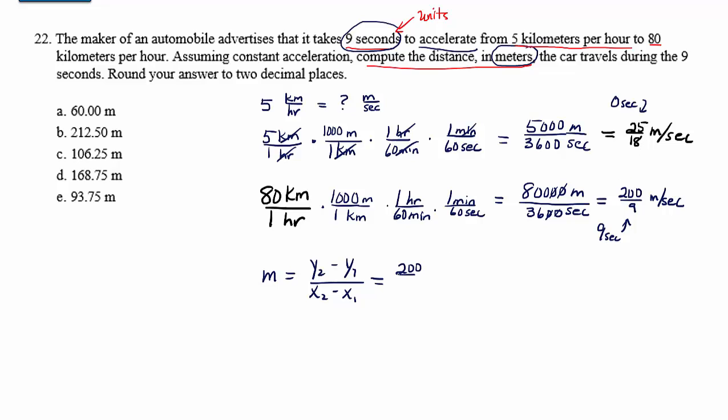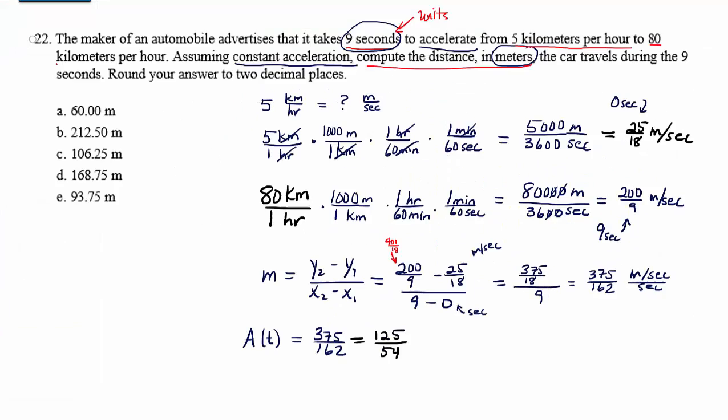And we're going to subtract y2 minus y1, 200 ninths minus 25 eighteenths, divided by x2 minus x1, nine minus zero. And so what that's going to give us is 375 over 162. Now, what are the units? Well, the units for the y coordinates, or the velocities, were in meters per second. And the units in the denominator were in seconds. So this is meters per second per second, or in other words, meters per second squared. This is an acceleration, so that makes sense that we would have those kinds of units. And we were told to assume a constant acceleration. So what we just found is that we can write an acceleration function a of t equal to 375 over 162, or that actually reduces to 125 over 54 meters per second squared.